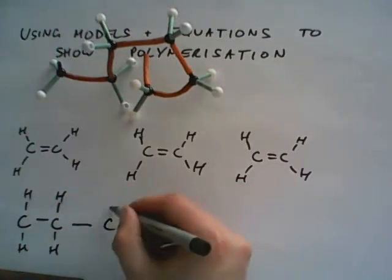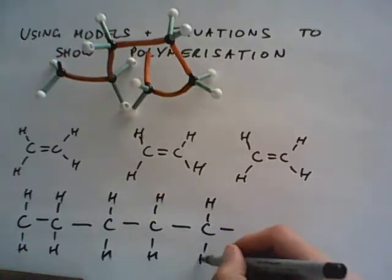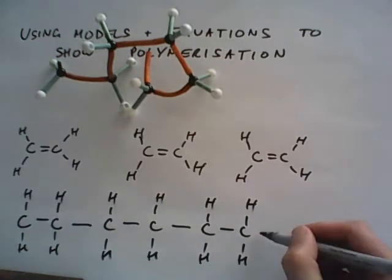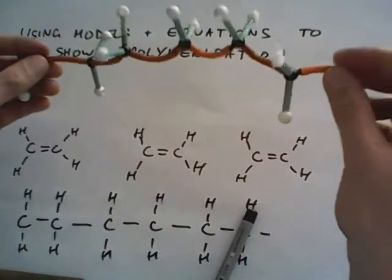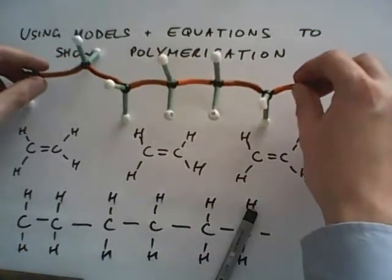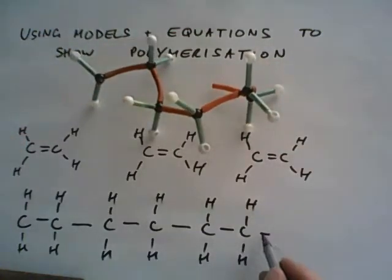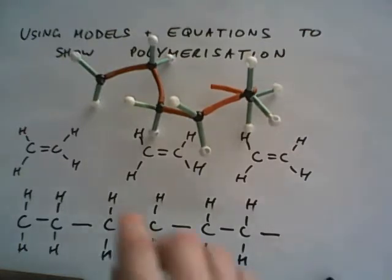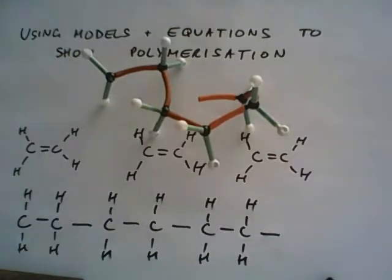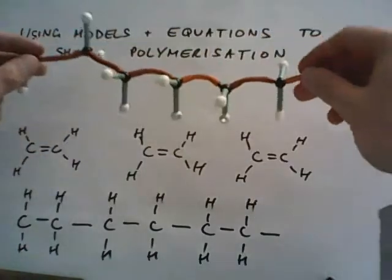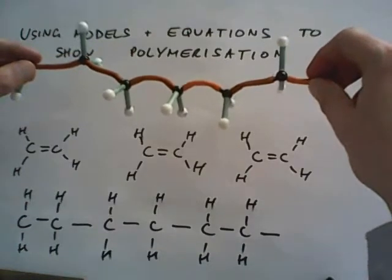Then that is joined to the next monomer. So I've now got a chain six atoms long. And if you have a look at the end, there's a bond on the end which could join to the next. We've got to remember that when polymerization happens, it's not just three monomers joining to make a polymer — it's millions and millions. So we need a way of representing that, which I'll show you next.